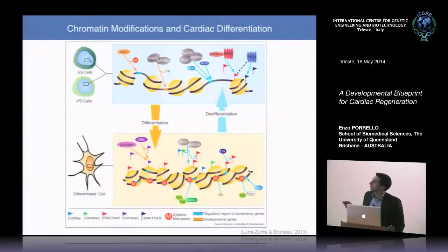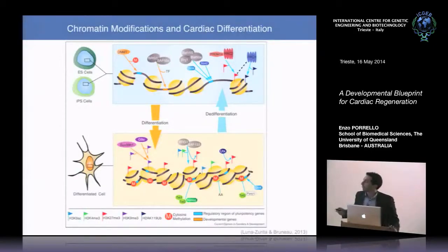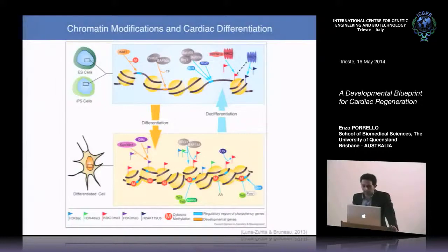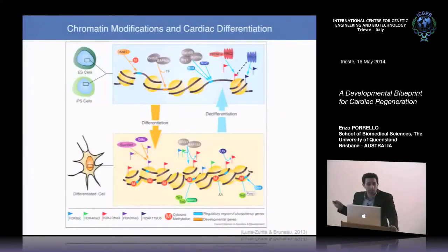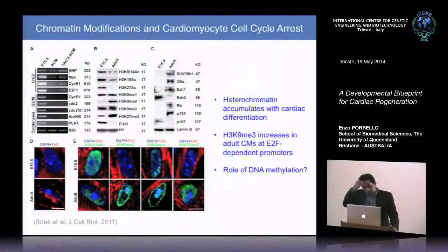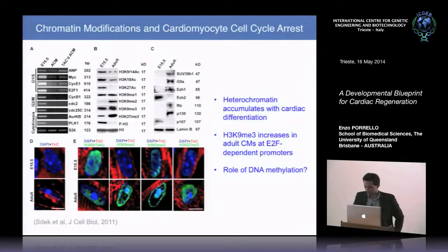These chromatin modifications may play important roles in cell differentiation and could potentially be targeted for de-differentiation. We've been particularly interested in chromatin modifications during the immediate postnatal period when cardiomyocytes are differentiating and withdrawing from the cell cycle. Work from Rob McClellan's group compared chromatin marks in embryonic versus adult cardiomyocytes, finding major changes in histone marks during cardiac development.